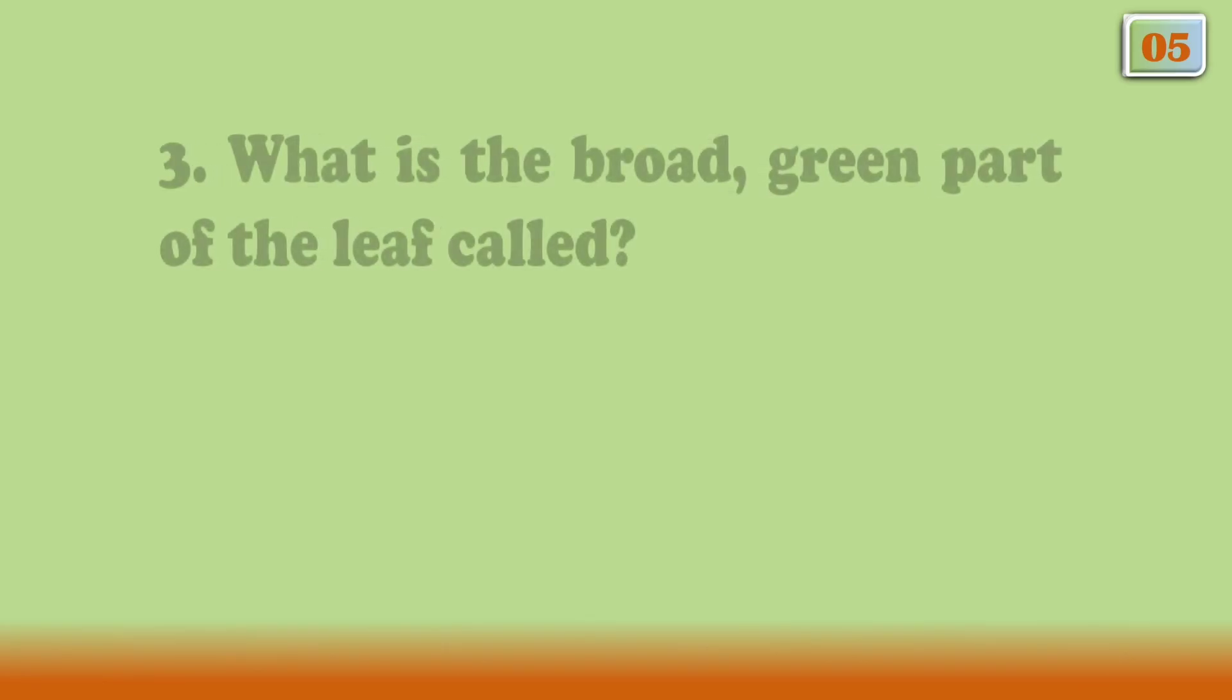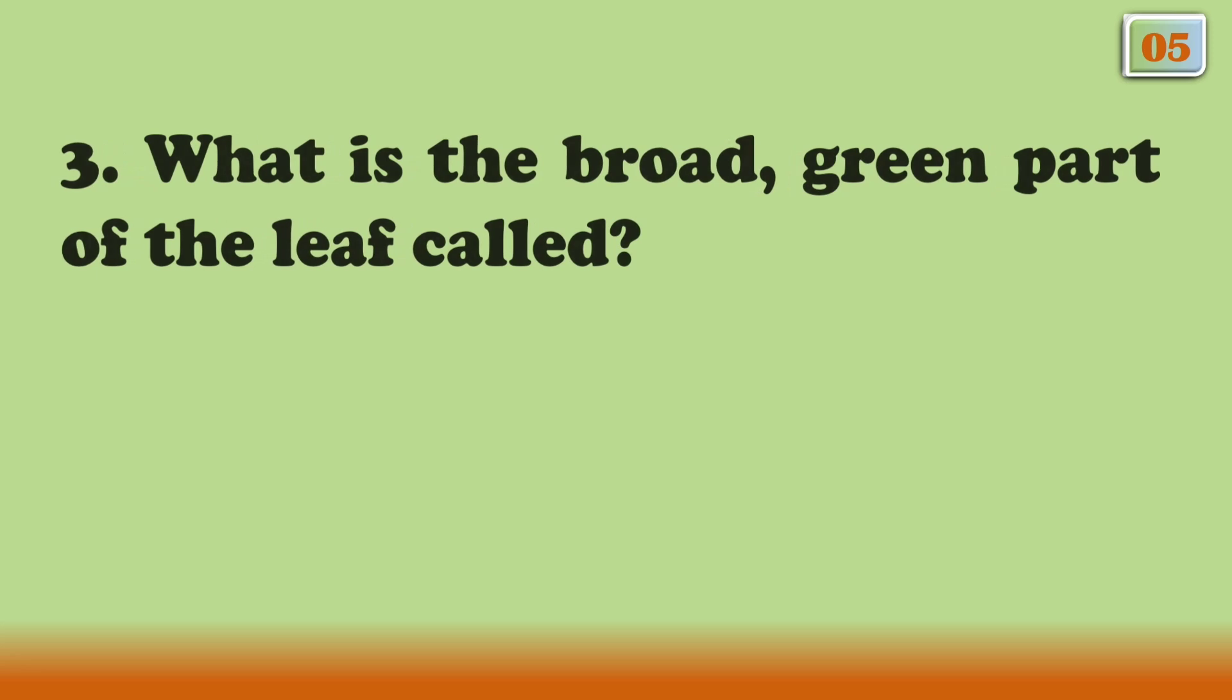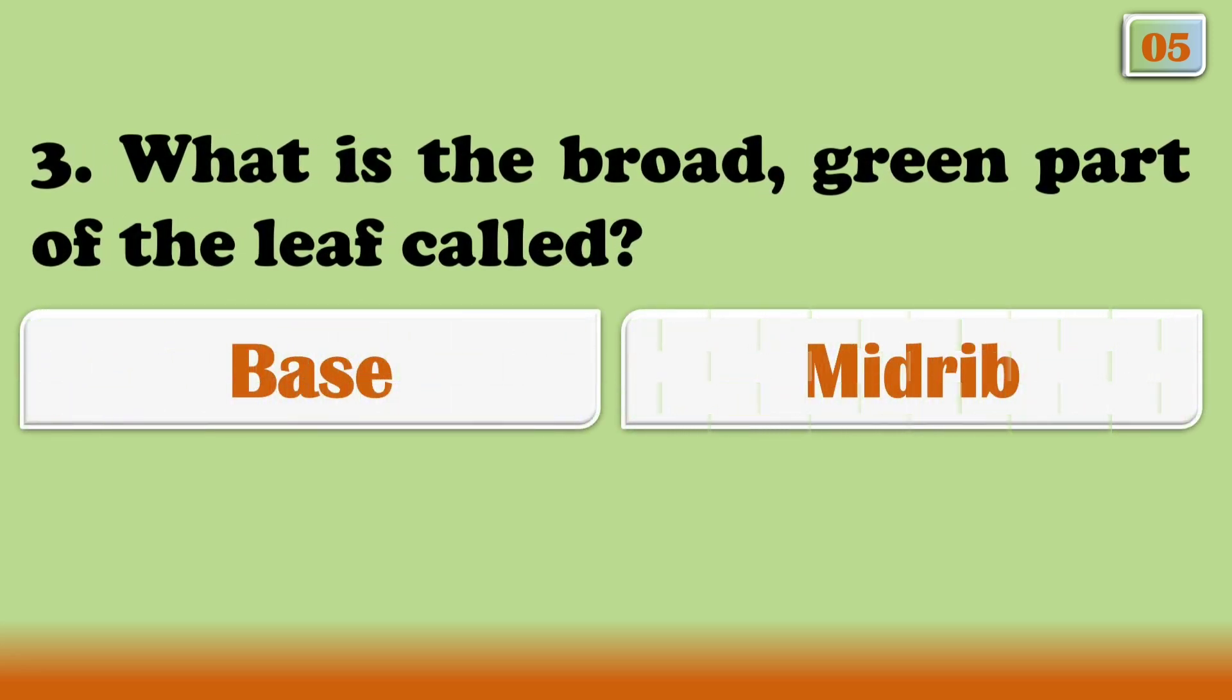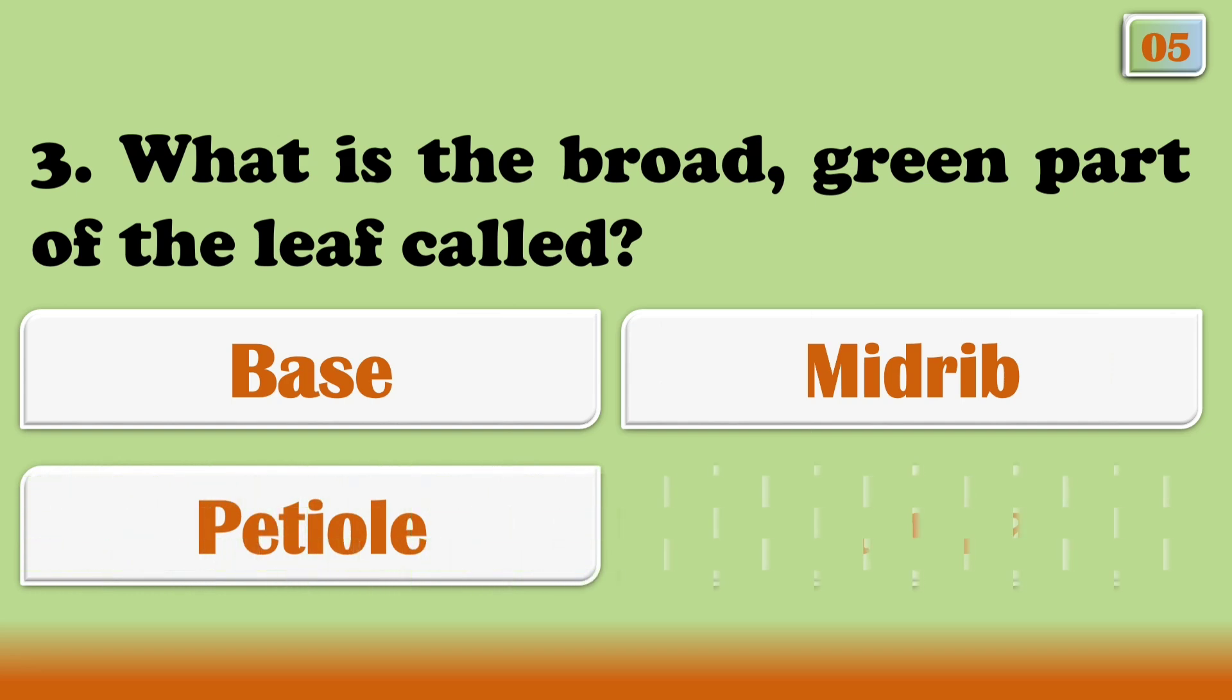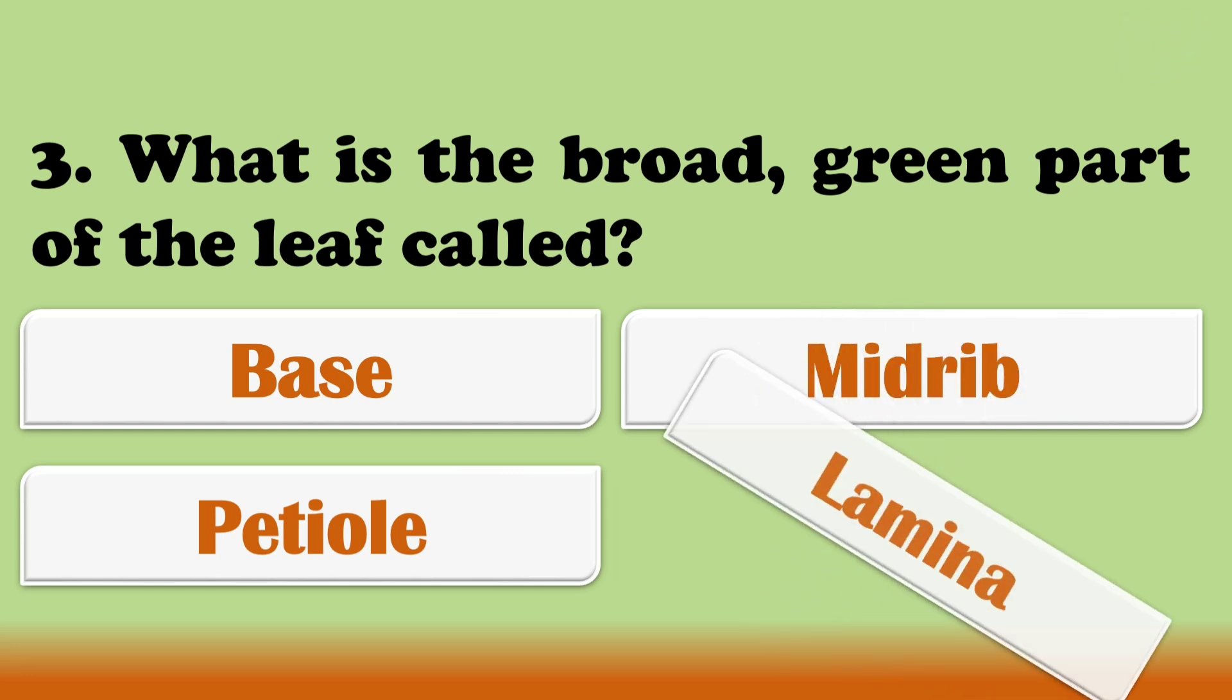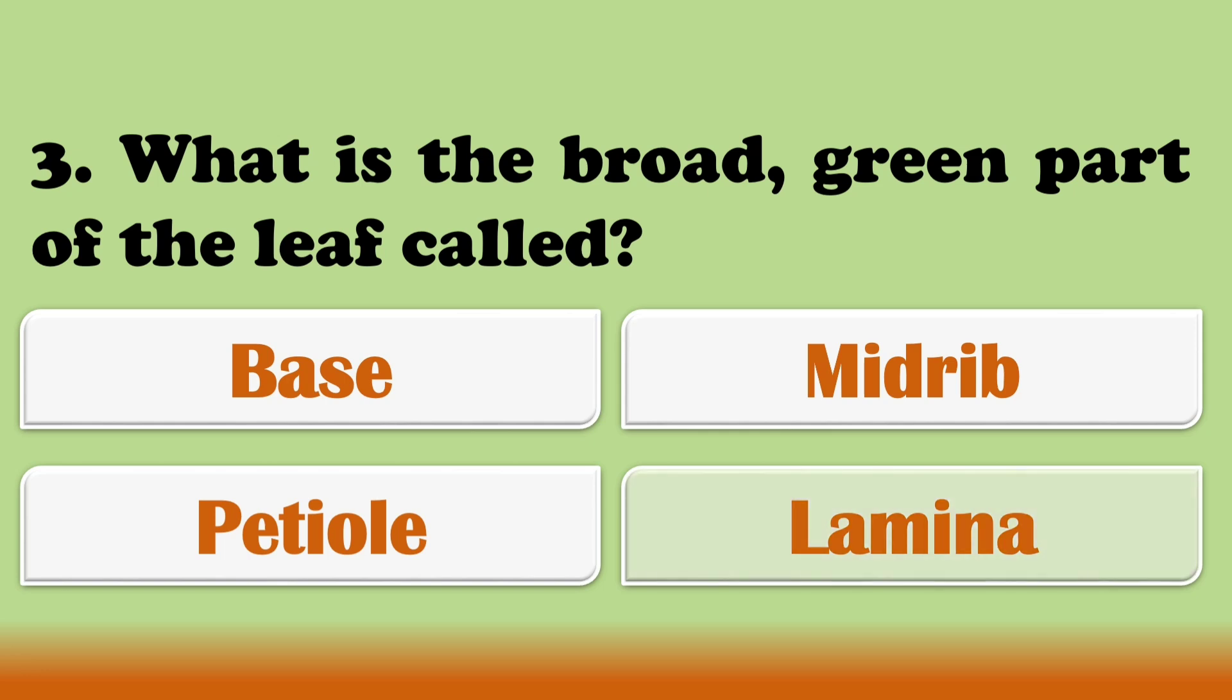What is the broad green part of the leaf called? The right answer is Option D. Lamina.